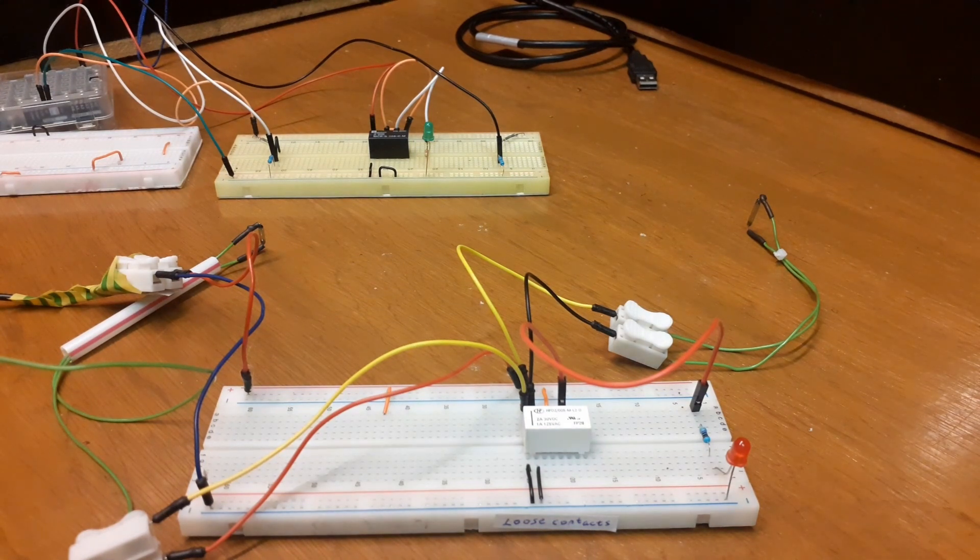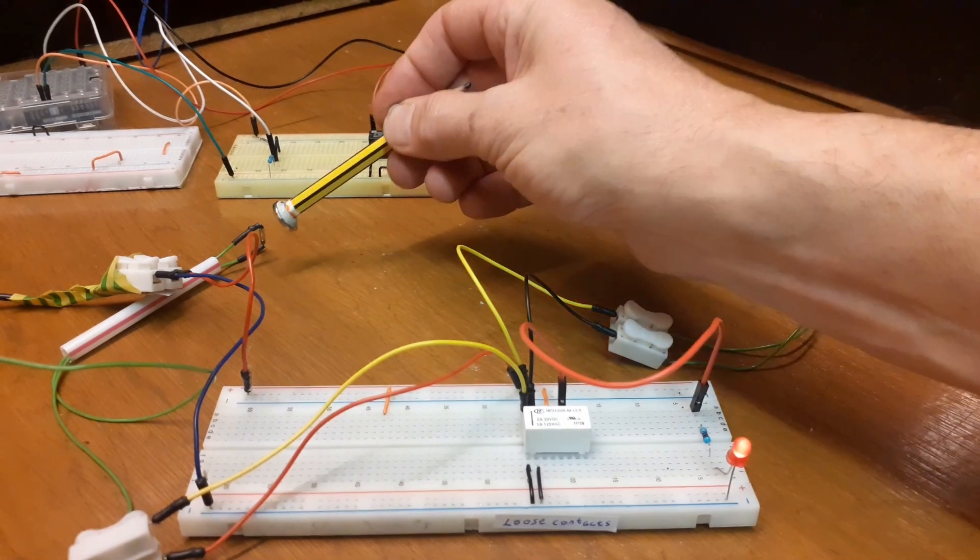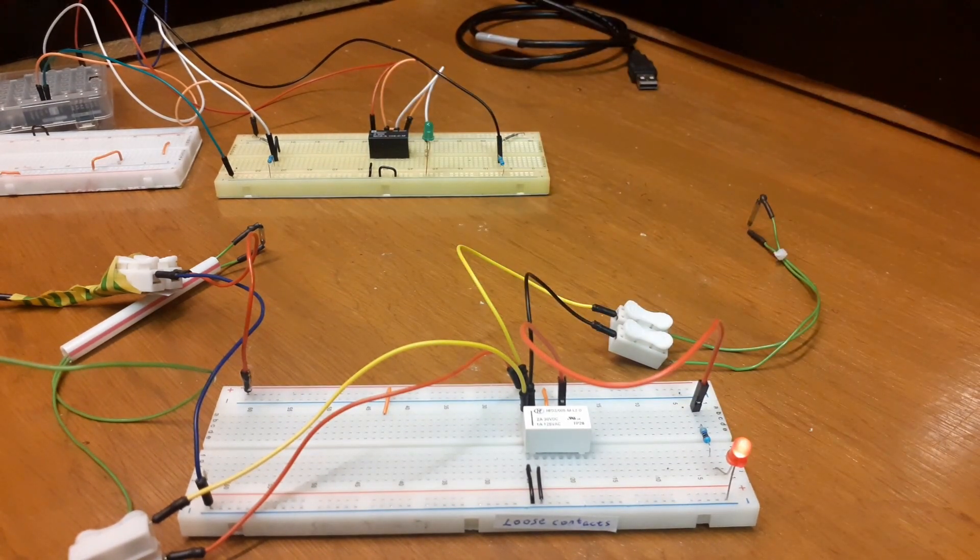As something moves along, moves to a distance, engages one switch, turns on the motor, moves further distance away, turns off the motor. So here we have reed switch on the left turns on the motor - LED in this case. The right hand reed switch turns off the motor. On, off.